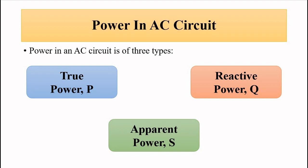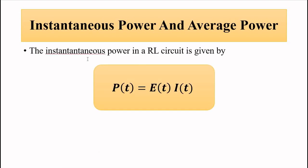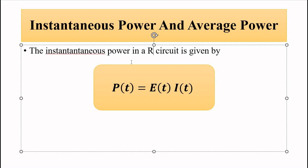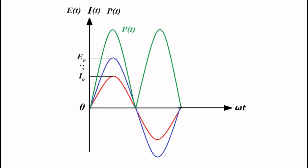Going back to provide context — we have a purely resistive circuit connected to an alternating voltage source, producing an alternating current. The instantaneous power is E(t) × I(t), and the average power is simply the product of the RMS values of voltage and current. Using the same relationships, we get E₀I₀/2, where E₀ and I₀ are the maximum values of voltage and current.